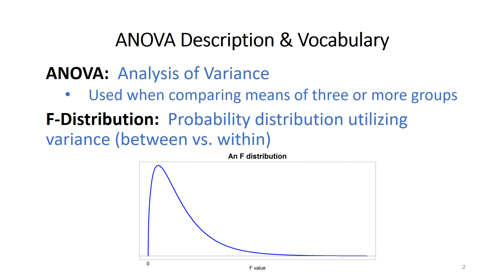The F-distribution is a probability distribution that utilizes variance. There are going to be two types of variance we'll talk about in more detail as we proceed through this lecture: what we call between group variance and within group variance. Just to make sure we're comfortable — I keep saying the word variance. The F-distribution is a distribution utilizing variance, and ANOVA is analysis of variance. Yet I started by saying ANOVA is used when comparing means of three or more groups. That's true — we are looking for differences across means, but behind the scenes statistically, we're looking at the ratio of different types of variance.